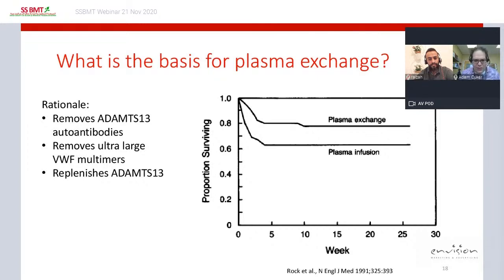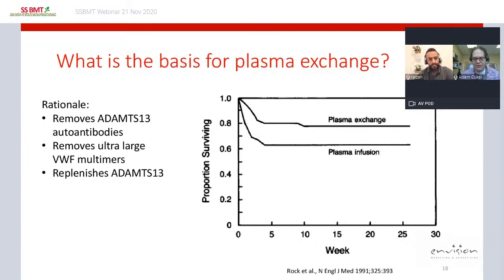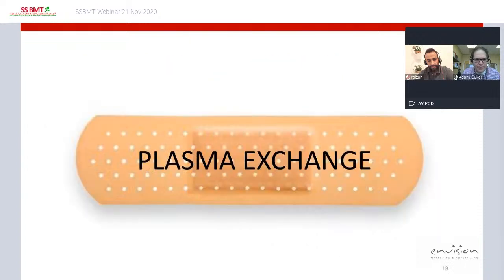In that trial, patients with acute immune TTP were randomized to plasma exchange or plasma infusion. There was a clear survival advantage for those randomized to plasma exchange. Many patients in the plasma infusion arm crossed over to plasma exchange, so this figure may actually underestimate the true survival difference. Since this trial, plasma exchange has become standard of care for immune TTP.